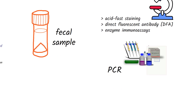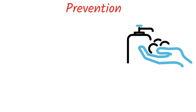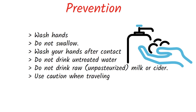One can reduce the risk of getting crypto by following these recommendations. Wash your hands often with soap and water — alcohol-based sanitizers are not effective against crypto. Do not swallow water while swimming. Wash your hands after contact with farm animals, pets, animal poop, and animal environments.